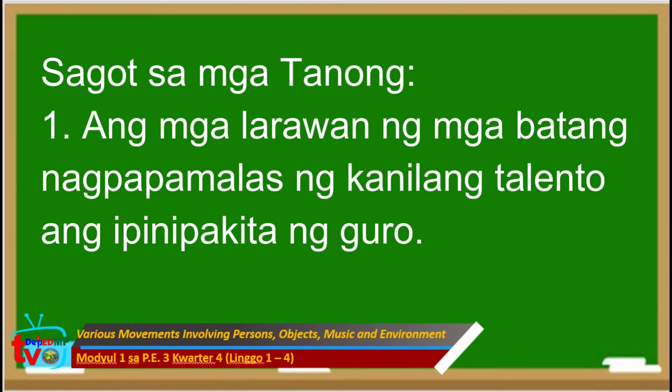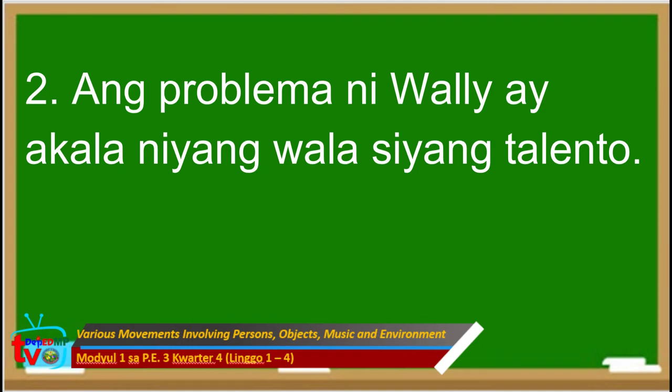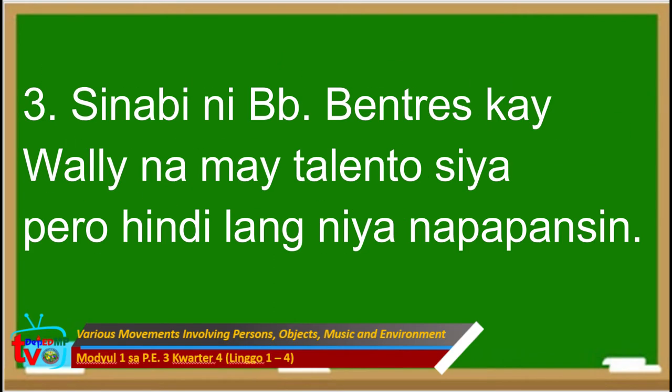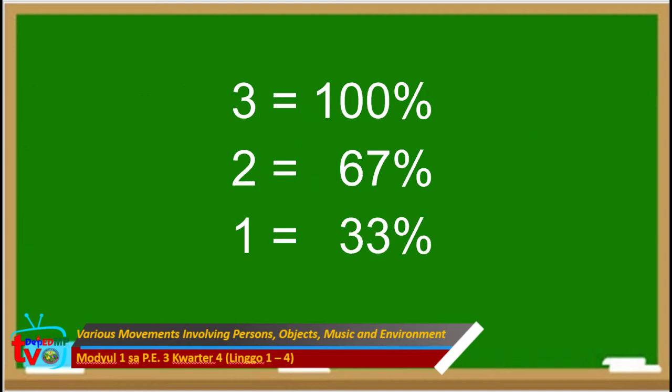Ito naman ang mga sagot sa mga tanong. Una, ang mga larawan ng batang nagpapamalas ng kanilang talento ang ipinapakita ng guro. Ikalawa, ang problema ni Wally ay akala niyang wala siyang talento. Ikatlo, sinabi ni Binibining Ventress kay Wally na may talento siya pero hindi lang niya napapansin. Kung ang nakuha mo ay tatlo, katumbas nito ay isang daang porsyento. Kung dalawa, animnaput pitong porsyento. At kung isa ang iyong nakuhang sagot, katumbas nito ay tatlumput tatlong porsyento.